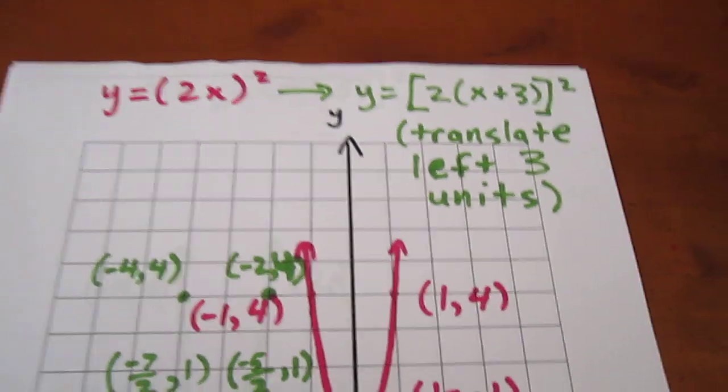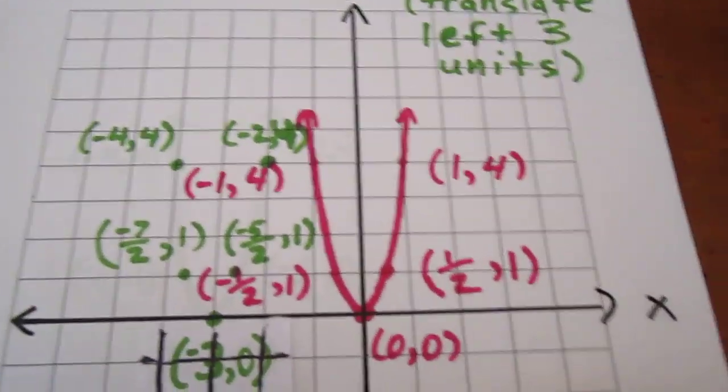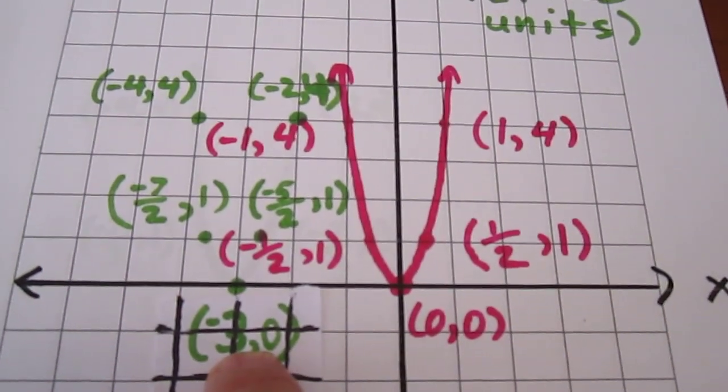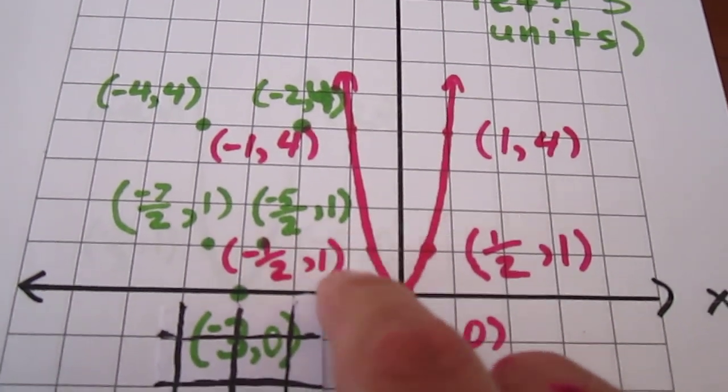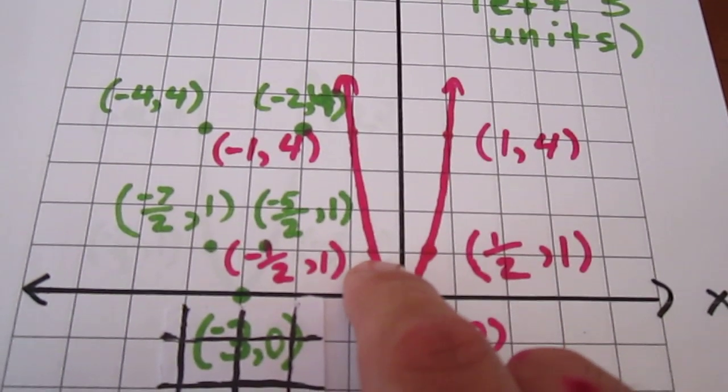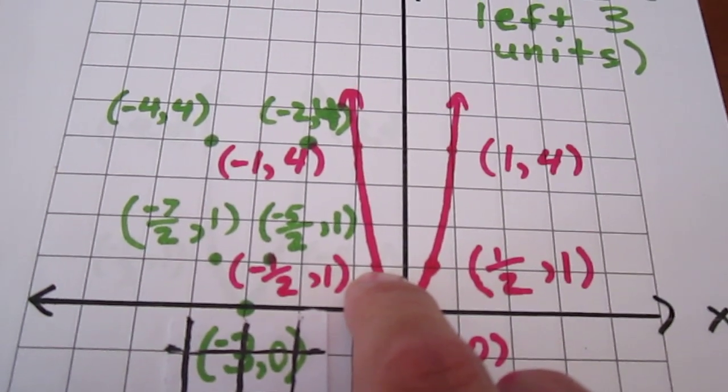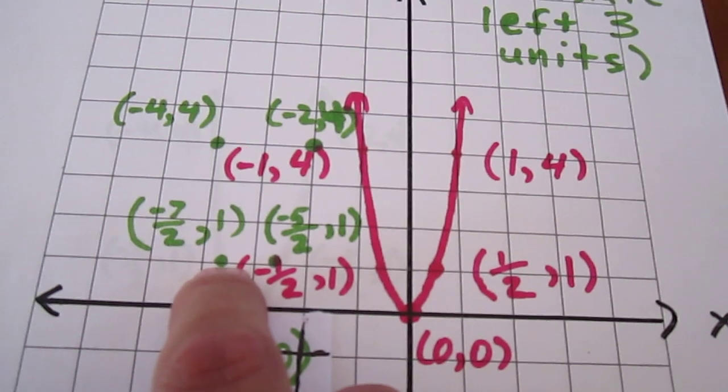What we're then going to do is consider what happens when we translate this curve 3 units to the left. Well, 0, 0 gets moved to negative 3, 0. 1 half 1 gets moved to negative 5 halves 1. And now, admittedly, it gets a little confusing here, but this point of negative 1 half 1, where my finger is, gets translated 3 units over to negative 7 halves 1.